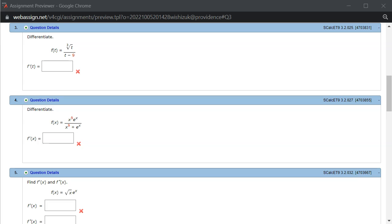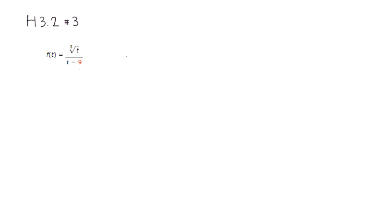Let's look at Hallmark 3.2, problem number 3. So let's take the derivative using the quotient rule. Before we do the quotient rule, I'm going to rewrite the cube root as the 1/3 power. So this is going to be t to the 1/3 power, divided by t minus 9.